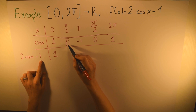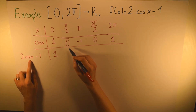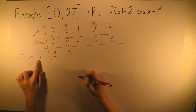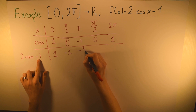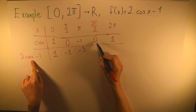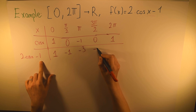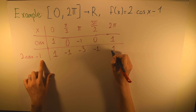Substituting: when x = 0, f(0) = 2(1) minus 1 = 1. When x = π/2, f = 2(0) minus 1 = minus 1. When x = π, f = 2(minus 1) minus 1 = minus 3. When x = 3π/2, f = 2(0) minus 1 = minus 1. When x = 2π, f = 2(1) minus 1 = 1.